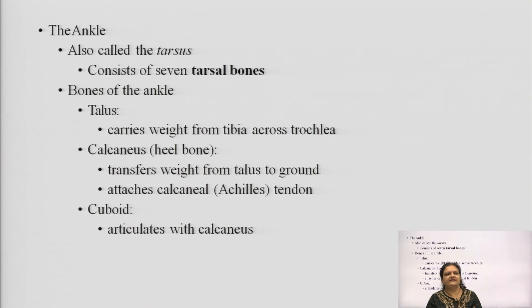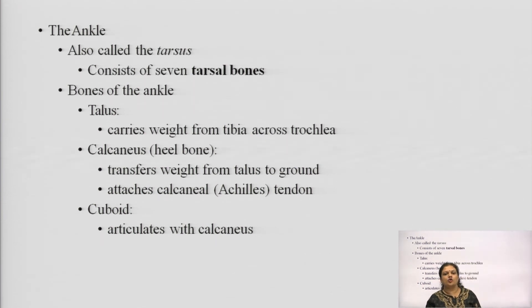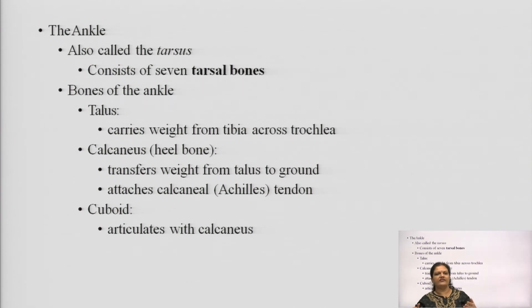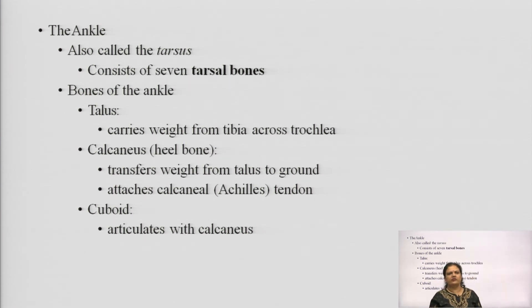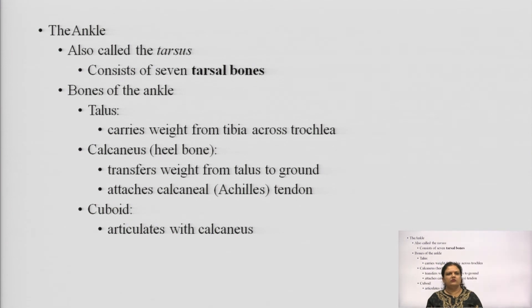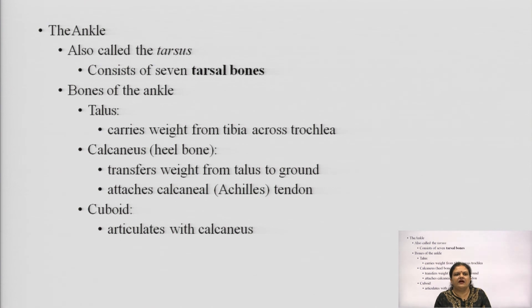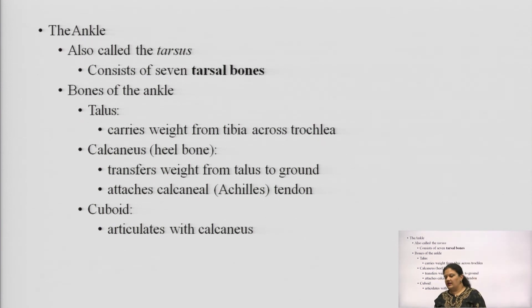The ankle is also known as the tarsals and consists of 7 tarsal bones, classified into three: talus, calcaneus, and cuboid. Talus carries overall weight from the tibia across the trochlear notch. The calcaneus, also known as the heel bone, transfers weight from the talus to the ground. The cuboid bone helps in articulation with the calcaneus bone.